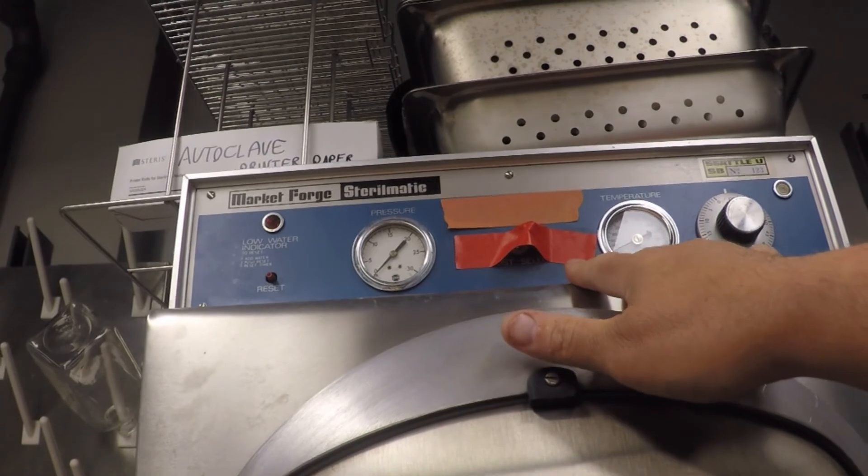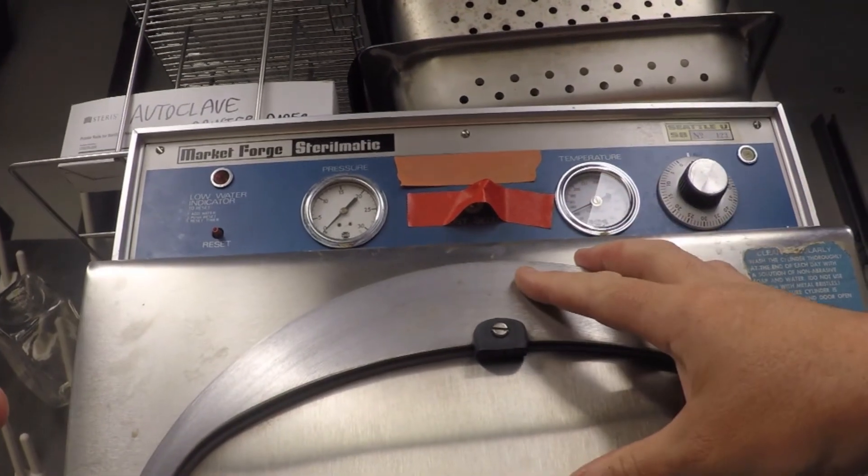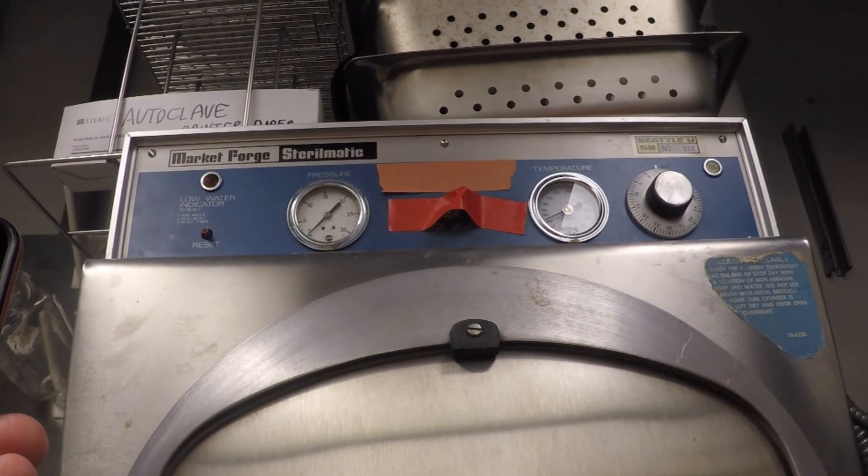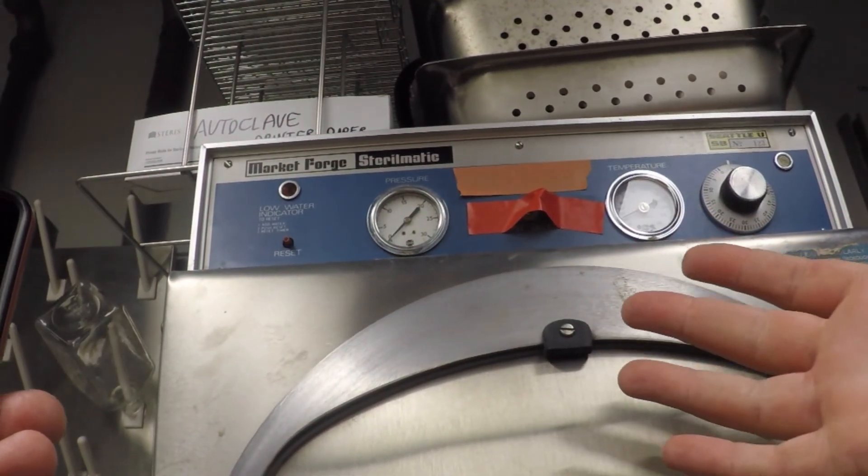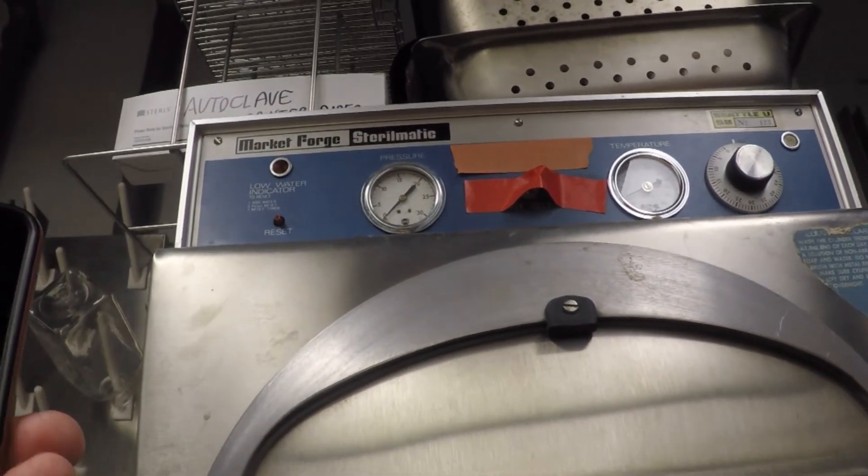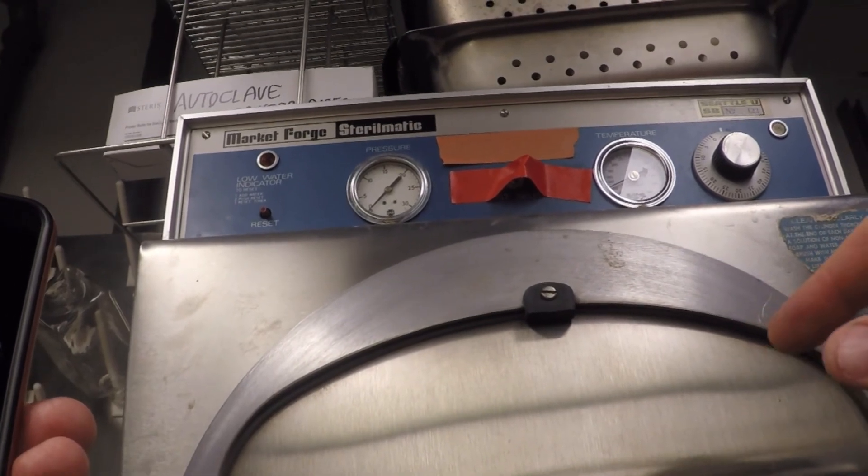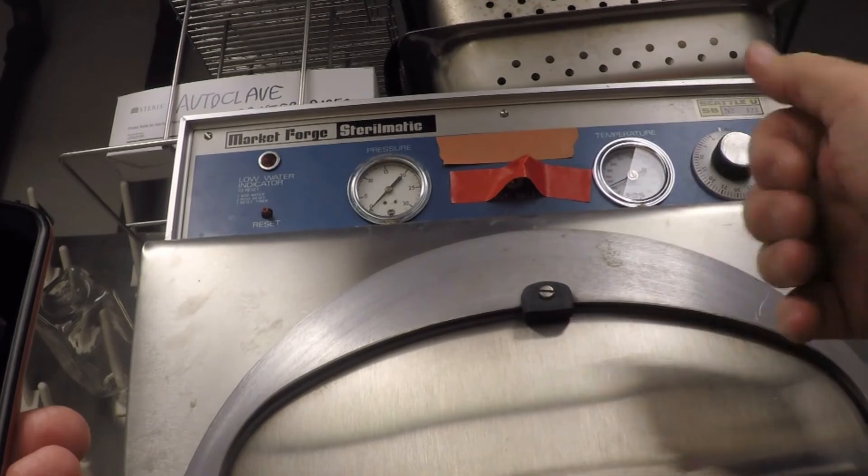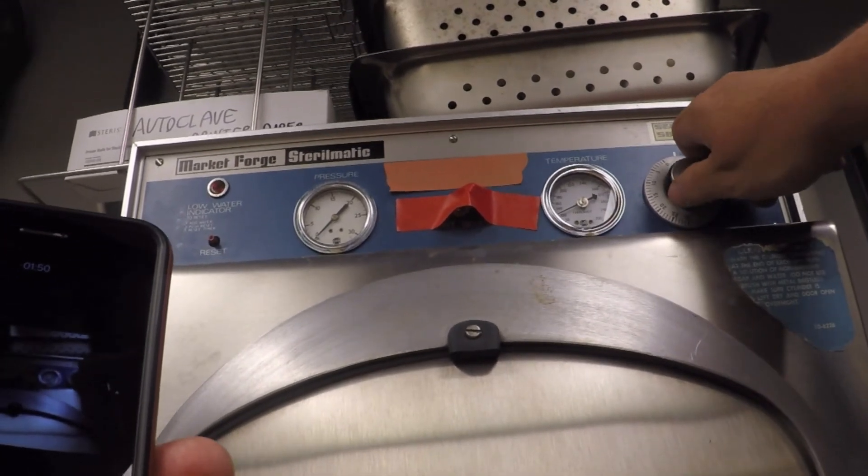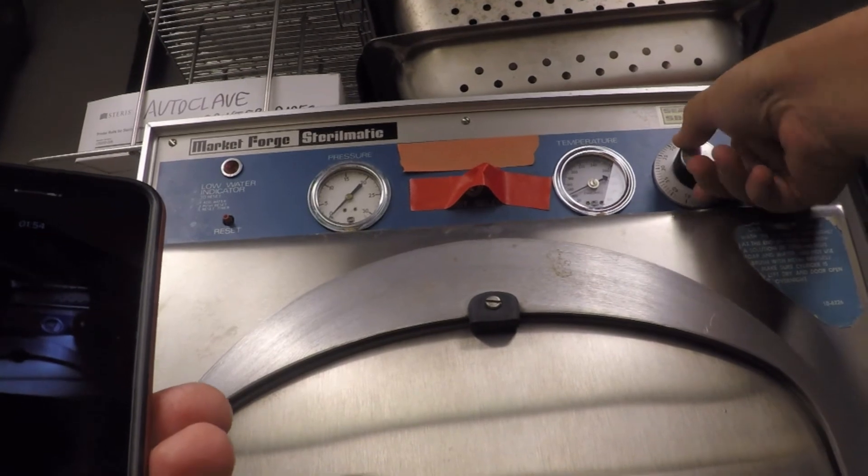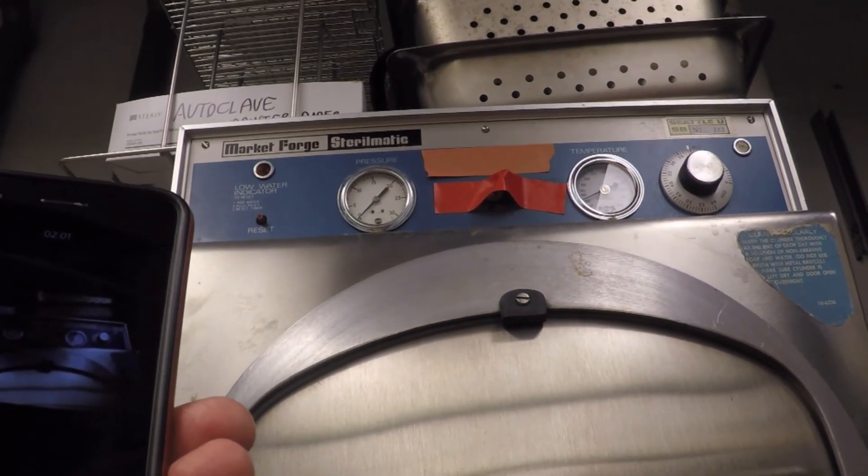You always have it on slow exhaust if you're autoclaving liquids. If you're autoclaving forceps, razor blades, petri dishes, glass petri dishes, then you can use fast exhaust. So utensils and things, fast is okay. Liquids, always on slow. You get a timer—in general it's 20 minutes per liter. I'm going to put this on 20 even though I've only got 500 mils in there. Then we just let it go and it'll come out later, and we'll have sterile McConkey's.